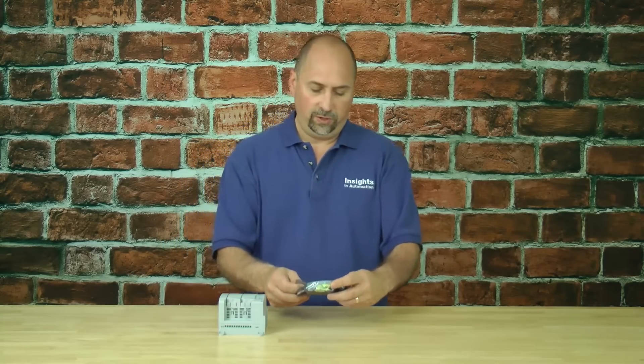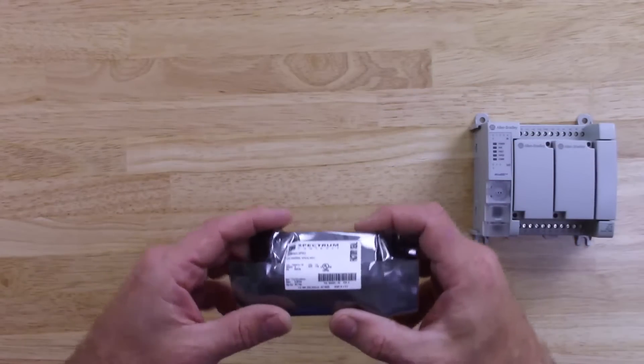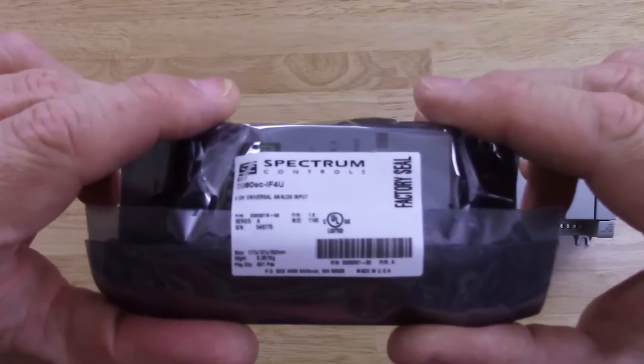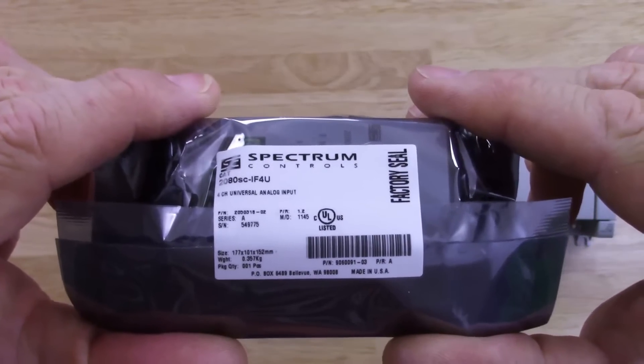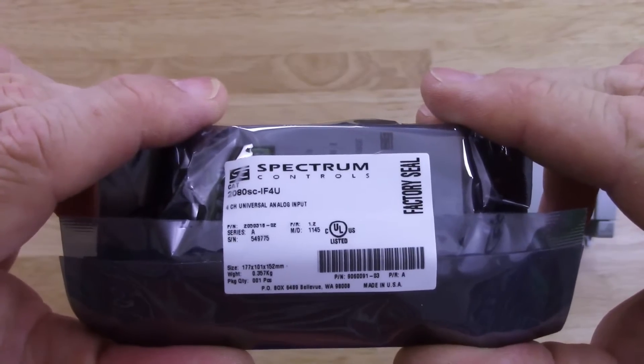Here I have a Spectrum Controls Universal Analog N. Let's zoom in on the label here so you can take a look at it. And this is a factory sealed unit.